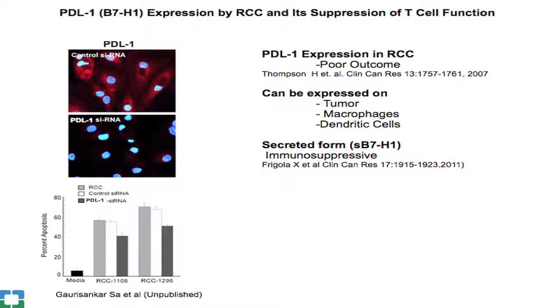Chemokines and chemokine receptors are also an important area of investigation. Different suppressive cell types express different receptors, and corresponding ligands attract these cells into the tumor. Identifying which chemokine-receptor interactions are most important for trafficking suppressive cells is an active and important area of investigation.